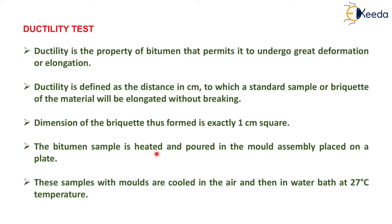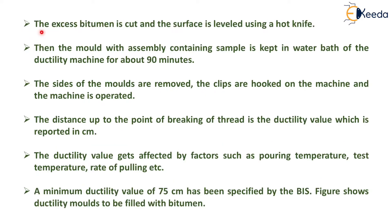The bitumen sample is heated and poured into the mold assembly placed on a plate. These samples with molds are cooled in air and then in a water bath at 27 degrees Celsius. The excess bitumen is cut and the surface is leveled using a hot knife. Then the mold assembly containing the sample is kept in the water bath of the ductility machine for about 90 minutes. The sides of the molds are removed, the clips are hooked on the machine, and the machine is operated. The distance up to the point of breaking of the thread is the ductility value, which is reported in centimeters.